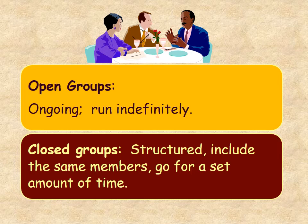There are two different types of groups. An open group runs indefinitely and is ongoing — like some AA meetings where people come and go as needed, or bereavement and other support groups. A closed group is structured, includes the same members, and runs for a set amount of time. Some AA meetings are closed groups where specific people work on their issues and don't want people coming and going during the meeting.